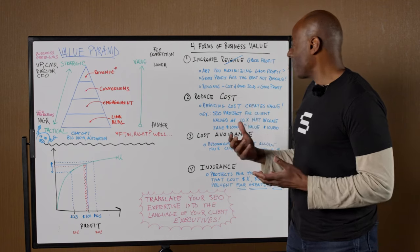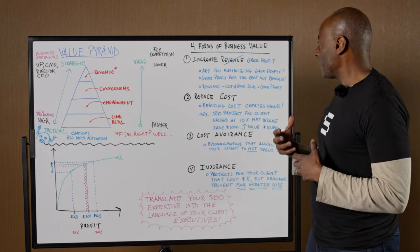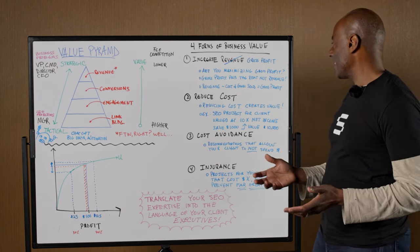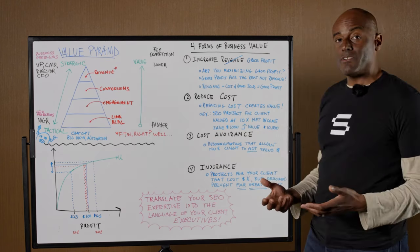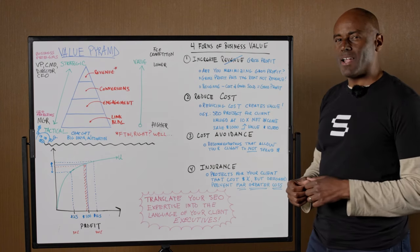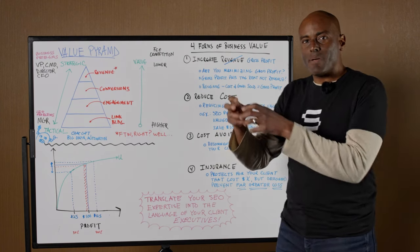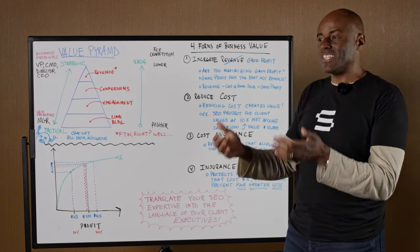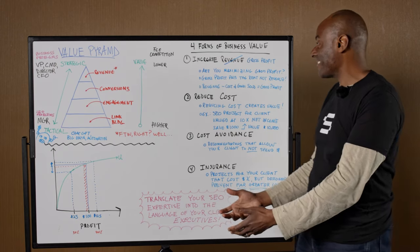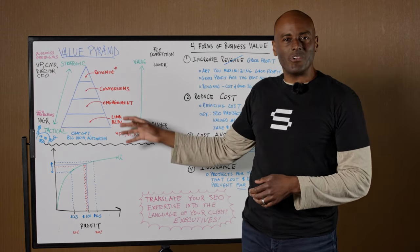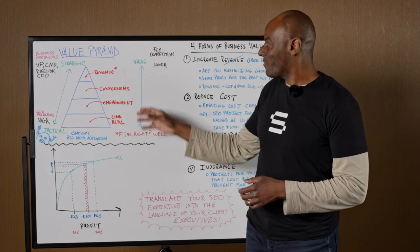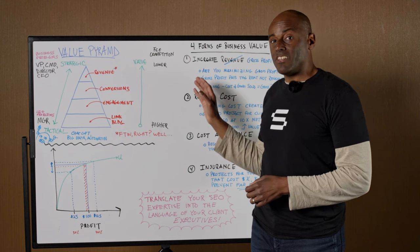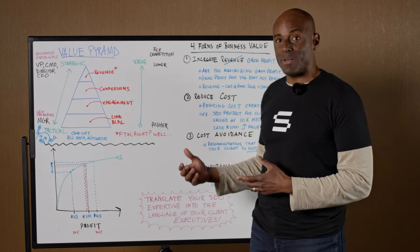So you kind of see how understanding a little bit more of what happens at this level can help you put what you're doing here in greater context. When I talk about gross profit, gross profit is basically revenue minus cost of goods sold, or COGS, generally speaking. The thing to bear in mind is that gross profit pays the rent, not revenue.